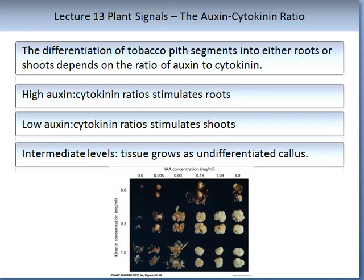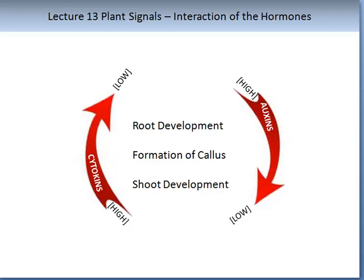Let us look at the role of auxin to cytokinin ratios. The differentiation of tobacco pith segments into either roots or shoots depends on the ratio of auxin to cytokinin. When there is a high auxin to cytokinin ratio, root growth is stimulated. When there is a low auxin to cytokinin ratio, shoots are stimulated. Where you obtain intermediate levels of auxin to cytokinin ratios, the growth results in undifferentiated callus. The figure on the slide illustrates the interaction of cytokinin and auxins and how they influence plant cell growth and division.